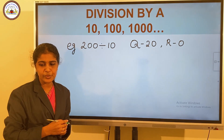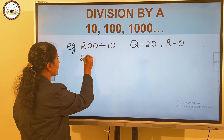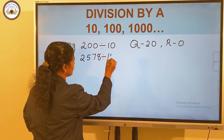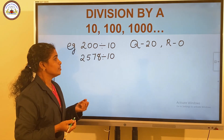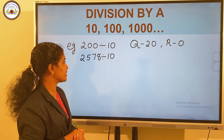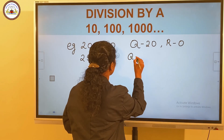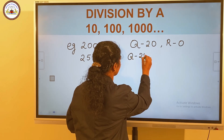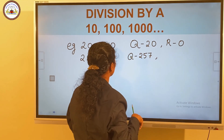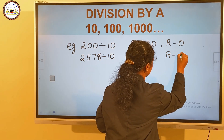Let's take one more example: 2,578 divided by 10. We get the quotient by removing the ones place. So the quotient is 257. And the remainder is the ones digit, which is 8.